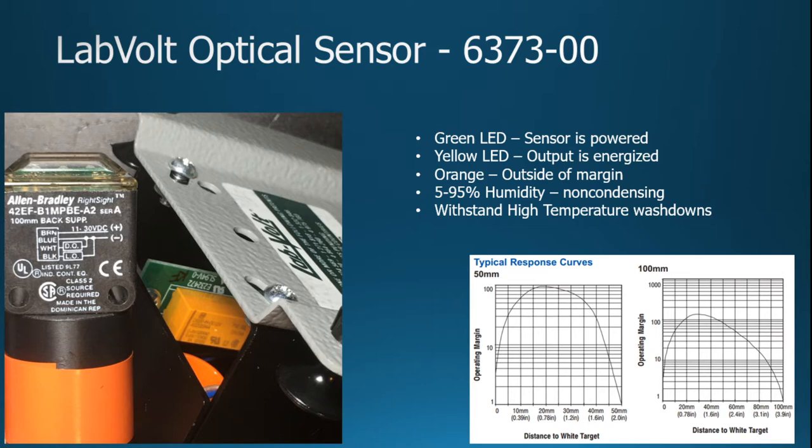Now, as far as the LEDs, there's actually three LEDs: a green, a yellow, and an orange. The green actually shows up a little bit above the trademark symbol on the sensor there in the top right hand corner. The yellow is the center sensor. The yellow sensor will tell us that the output has been triggered. The orange says it's kind of outside the margin.